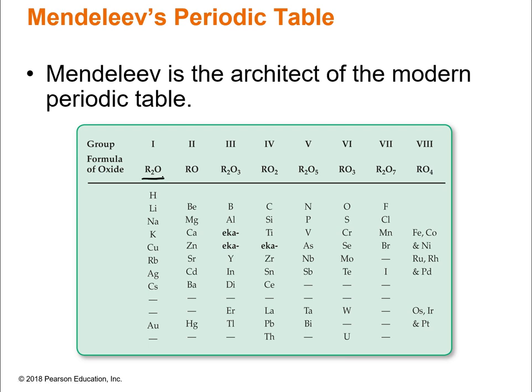For example, in the first group Mendeleev put R₂O — R is just equal to your given element, like the X in a math equation. All elements that form an oxide with the formula R₂O, like hydrogen giving H₂O (water) or lithium giving Li₂O, are in the first group. So he organized all of the known elements based on how they form a compound with oxygen.